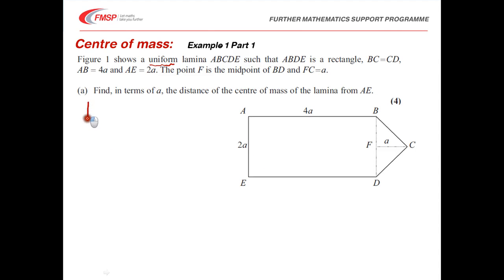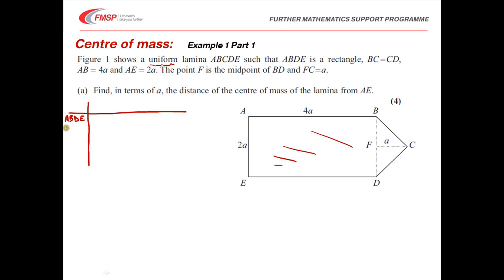Let's set up our table of values. The parts I'm going to consider are: first, rectangle ABDE — the large rectangle forming the main part of the body; second, triangle BCD, which is isosceles; and then the total. Using area as an analogue for mass: the area of the rectangle is 8a², and the area of the triangle is half times 2a times a, which is a². So the total mass of the lamina is 9a².